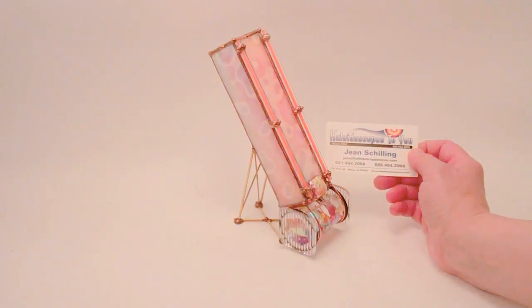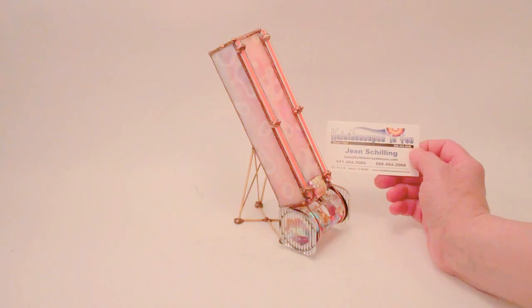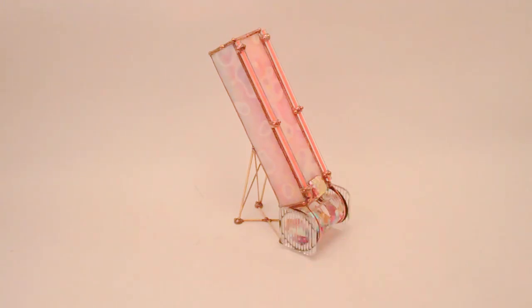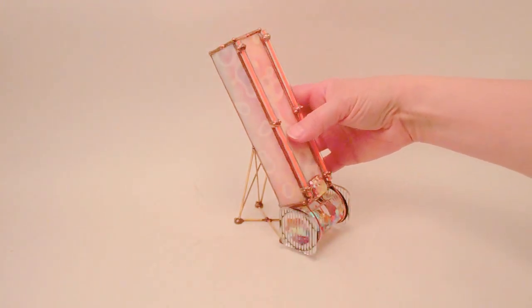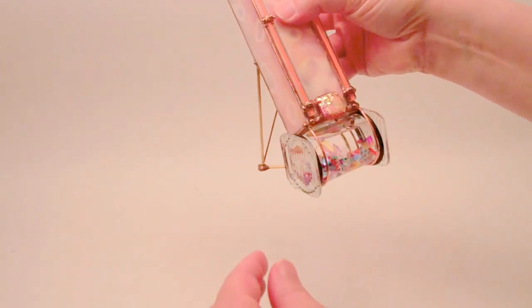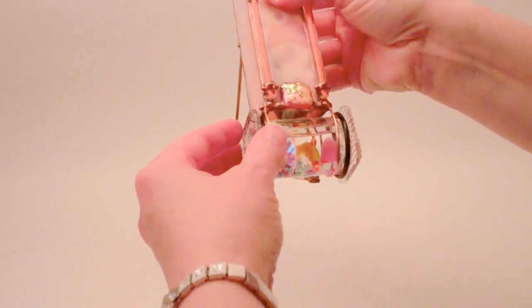Each one is slightly unique, so if you're viewing this on YouTube, please check back to our main website Kaleidoscopes2U.com to confirm availability. This series is called Wild Thing, and it's a Petite Parlor size, and the theme is an animal.